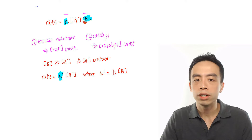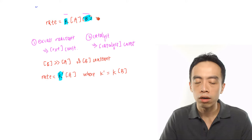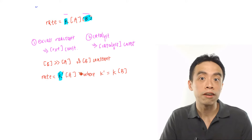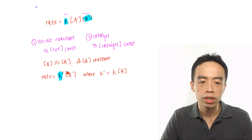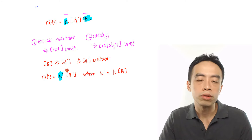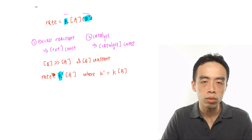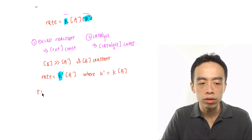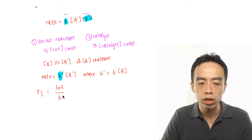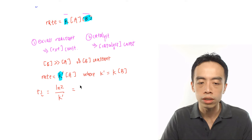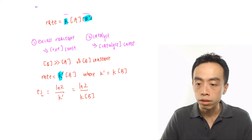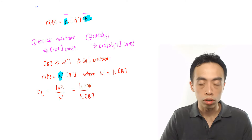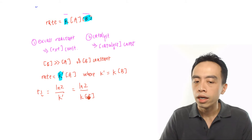Originally this was an order 2 reaction where we could not determine half-life because half-life is not constant. Now we have made it into an overall order 1 reaction, so half-life becomes a constant and we can determine it. This is what we mean by a pseudo-first-order reaction — the reaction is not actually order 1, but we make it appear like order 1 to find half-life more easily. The half-life is given by: T½ = ln 2 / K prime = ln 2 / (K × [B]). From this expression, we see that half-life is inversely related to the concentration of B.